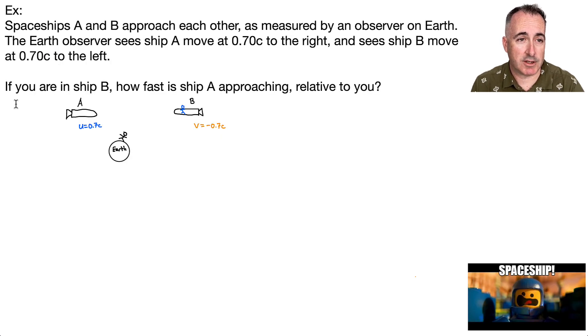So let's do an example here. So we'll have spaceships A and B. That's why I put this from a Lego movie. Spaceship! They're moving towards each other as measured by an observer on Earth. So the person on Earth is sitting here watching this. And the person on Earth thinks that ship A here goes 0.7C to the right. In other words, 70% the speed of light to the right. And they see ship B go 70% the speed of light to the left. Now the normal conventions, we normally say things going to the right are positive, left are negative, so I assigned a negative here. And the question is then, if you're sitting in ship B, how fast is A approaching you relative to you? In other words, how fast do you think A is approaching you?